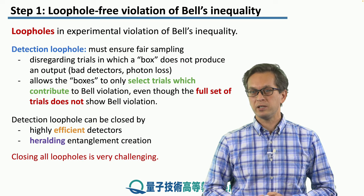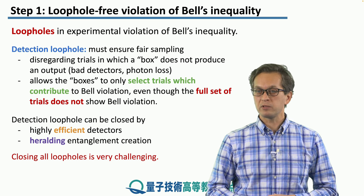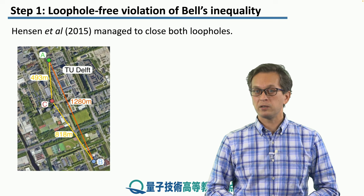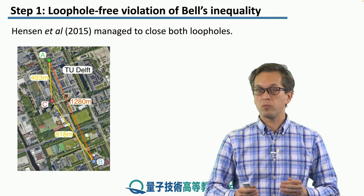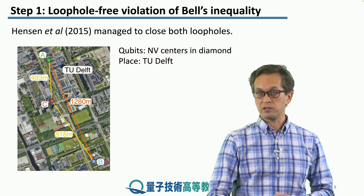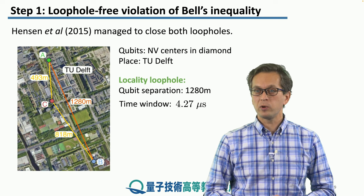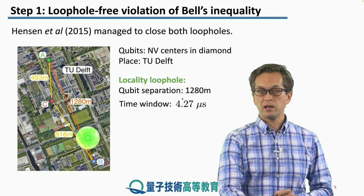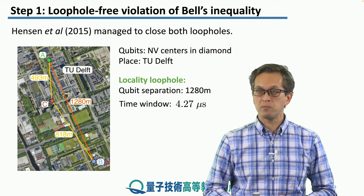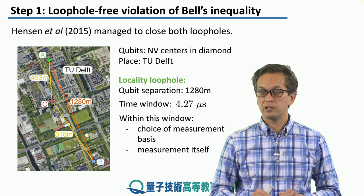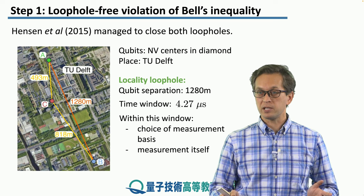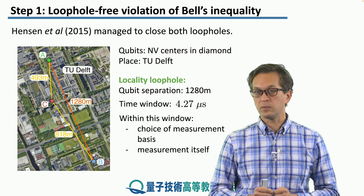Closing both loopholes is extremely challenging experimentally. There were experiments demonstrating closure of the detection loophole but not the locality loophole, or vice versa — until 2015 in the experiment by Hansen and collaborators, where they managed to close both loopholes. For their qubits they used NV centers in diamond, and the experiment was carried out in the Netherlands at the Technical University of Delft. They closed the locality loophole by separating the two qubits at locations A and B by close to 1.3 kilometers, giving them a time window of 4.27 microseconds. Within this time window, the experimentalists ensured that the measurement basis choice was made and the outputs of both measurements were produced, effectively demonstrating that the assumption of non-communicating qubits was valid.